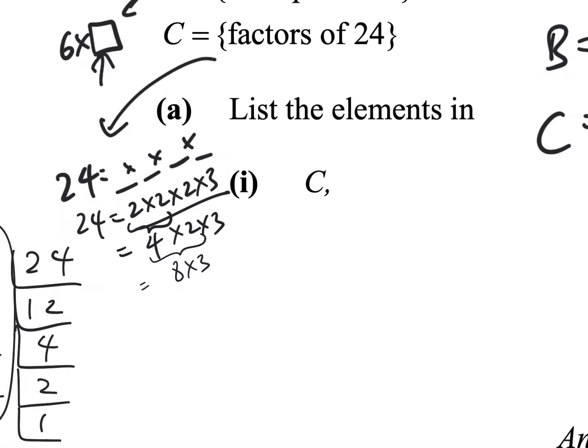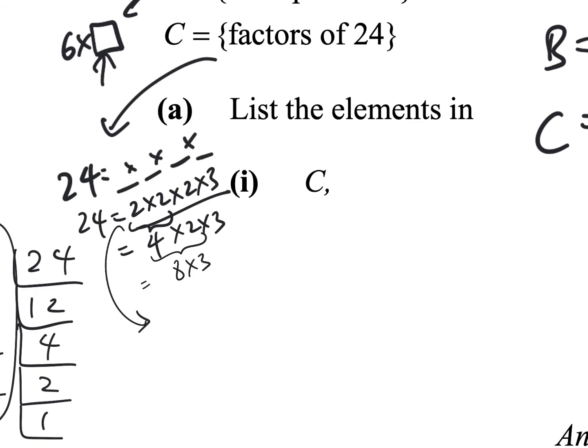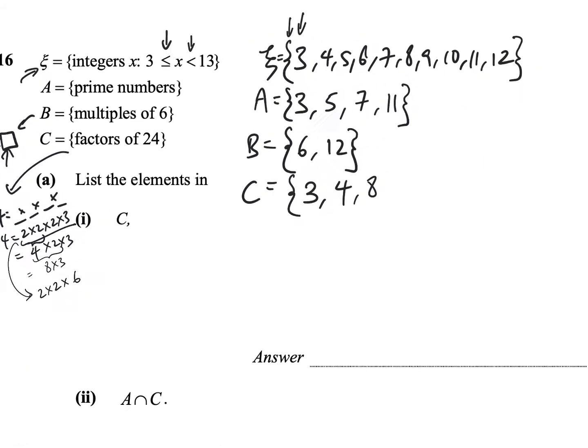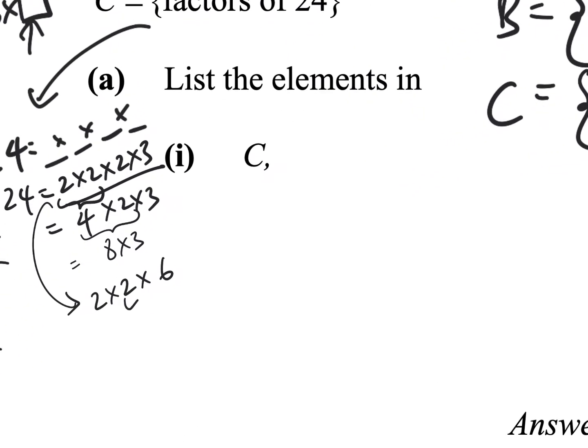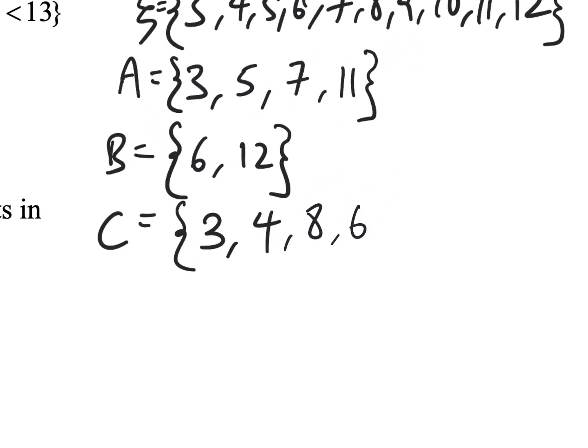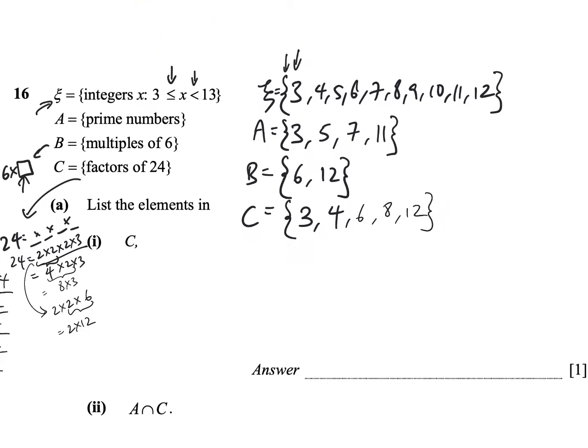And on the other hand, I could also write this as 2 times 2 times, and 2 times 3 gives me 6. So, 6 also is a factor, and then I can also combine these 2 to give 2 times 12, so 12 also is a factor. And there you go, so I like to write them in a proper order, and these are actually all the elements of C.